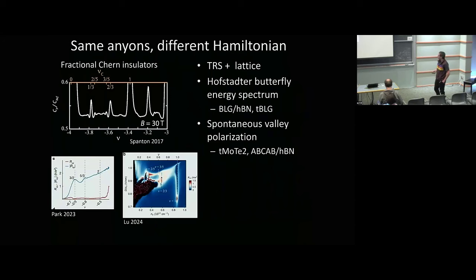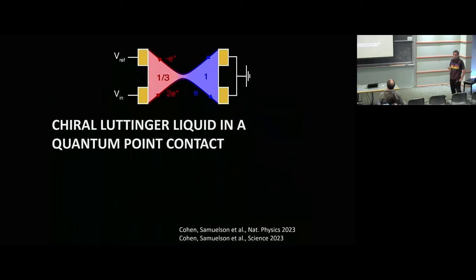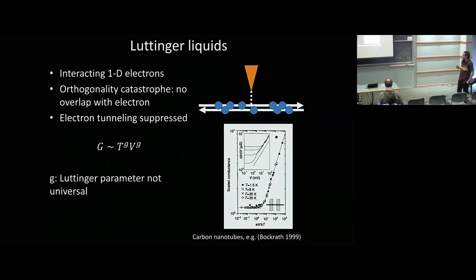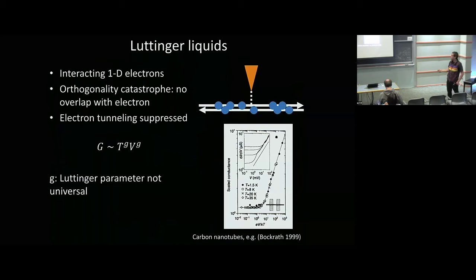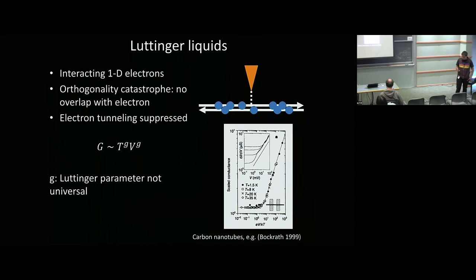I'll try to cover the opportunities in 2D materials from an experimental perspective. The first thing I want to tell you about is the physics of chiral Luttinger liquids probed in quantum point contacts. Luttinger liquids are the interacting one-dimensional version of a Fermi liquid, but with very different properties. The important one for us is the orthogonality catastrophe: the ground state of a Luttinger liquid has no overlap with a single electron wave function, so tunneling a whole electron into a Luttinger liquid is suppressed by some power law. In general 1D systems, that power law is not quantized — it depends on details of the system.